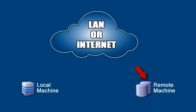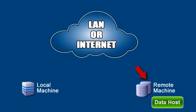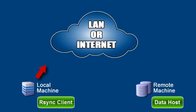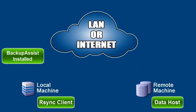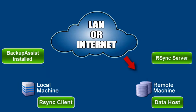Today we'll be discussing in broad terms what is required to perform a basic RSync backup. To avoid confusion, let's first define the following terms. Data host: this is simply a remote machine on which you store your data. RSync client: this is a machine that contains your working data, typically a file server that has Backup Assist installed. RSync server: the data host becomes the RSync server once the RSync programs are installed. The RSync server accepts incoming connections as well as data from the RSync clients.